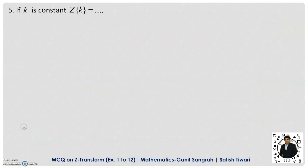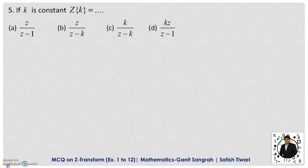Question 5: If K is a constant, then the Z-transform of K is — we have four options. Since K is a constant, we take K outside the summation and find the Z-transform of 1. The Z-transform of 1 is the well-known formula Z/(Z−1). Therefore K times Z/(Z−1), and option D is the correct option.